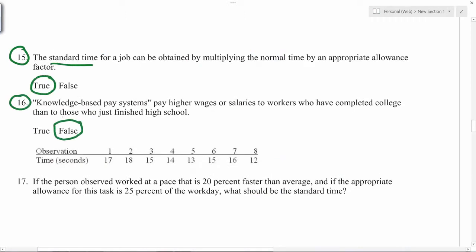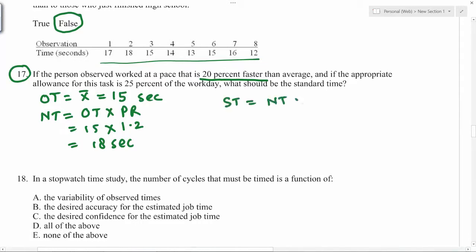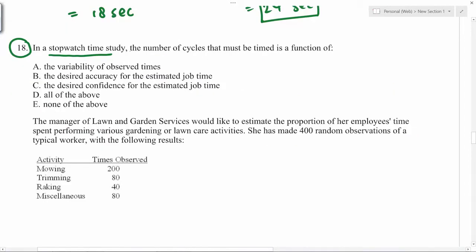Observed time is the x-bar or the average of all the data points. If you add all these and divide by 8, because there are 8 data points, we get 15. NT or normal time is OT times PR. So OT is 15, PR is 20 percent faster means 1.2, so this is 18 seconds. Finally, standard time equals normal time times AF. In this situation we are doing allowance for workday, so AF equals 1 divided by 1 minus 0.25, which is 1.333. So NT 18 times 1.33 will give you 24 seconds.